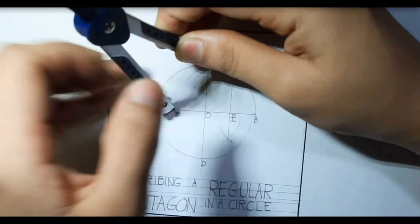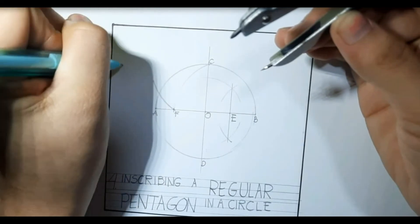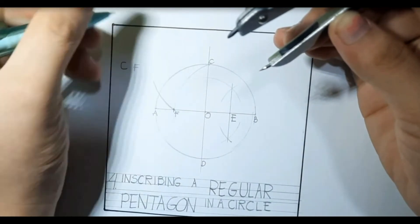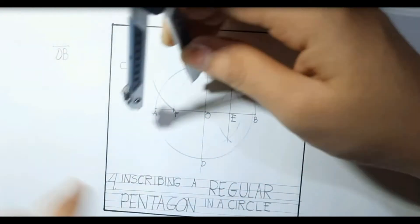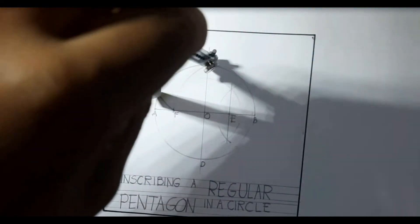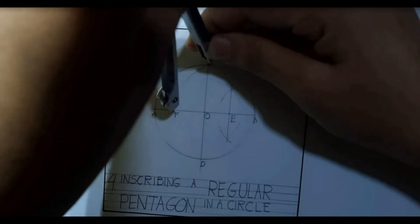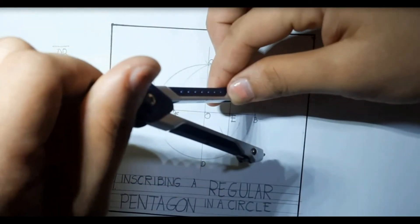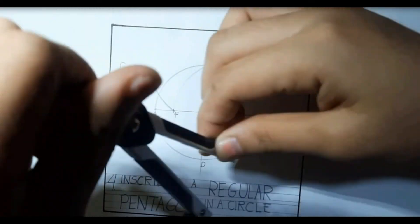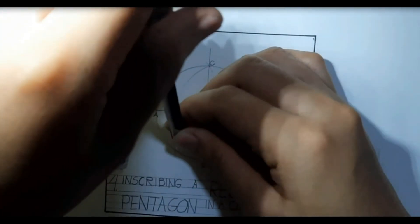Place the needle of the compass on point C and pencil on point F. Take note, do not close your compass. You need that distance to make four more arcs around the circumference of the circle. You have now three arcs, four, and last arc. Make sure that the last arc will intersect on the first arc.